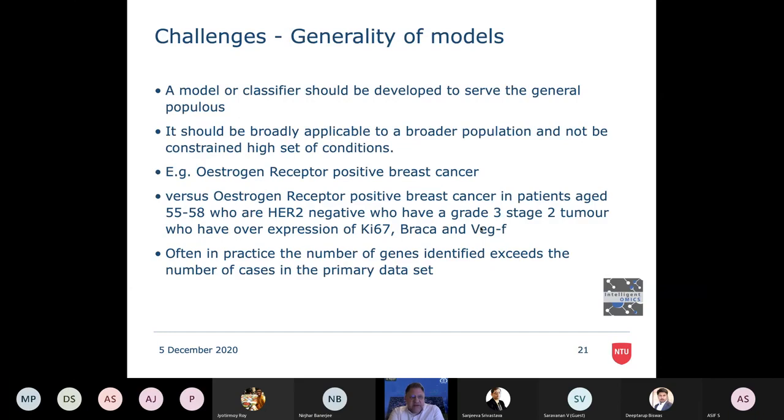Another challenge is the generality of models. What we want is a model that will serve the general populace. If it's a panel of diagnosing a particular type or subtype of cancer, then we need that to work for new cases, for the population. There's no point us just being able to predict for a set of people in a very small population. So what we want to do is be applicable broadly to a broad population and not be constrained by a large set of conditions. Unfortunately, sometimes there's a tendency in scientists to gain understanding. They control something to such an extent that it ceases to be meaningful.